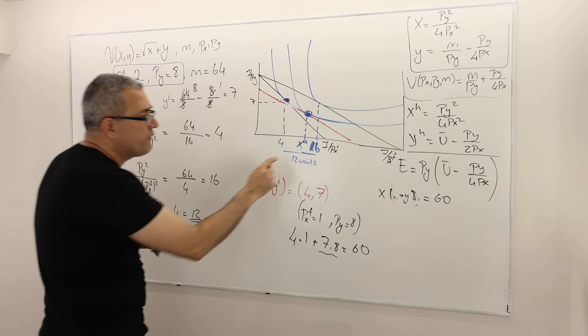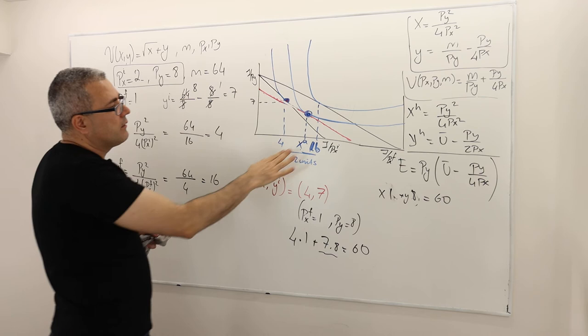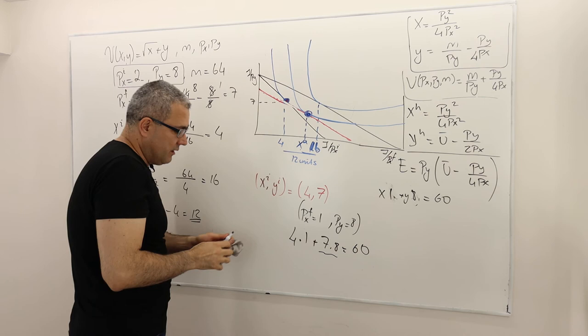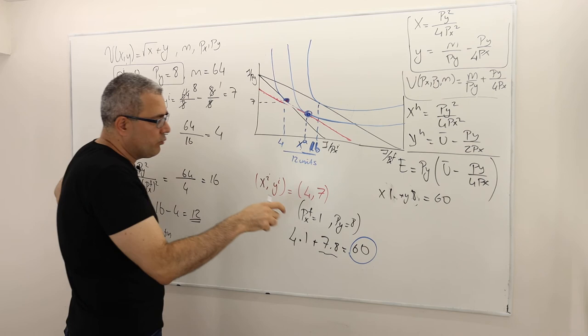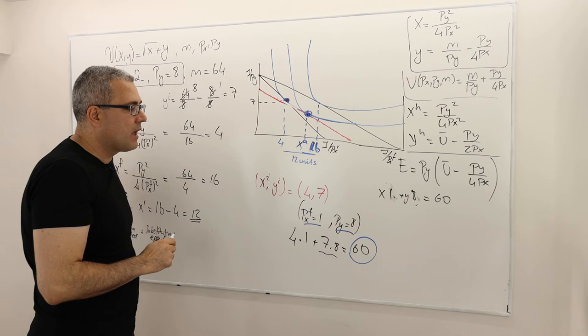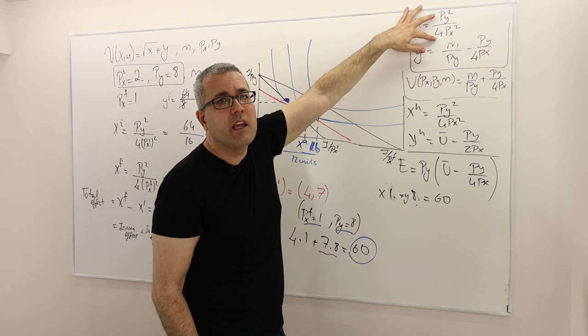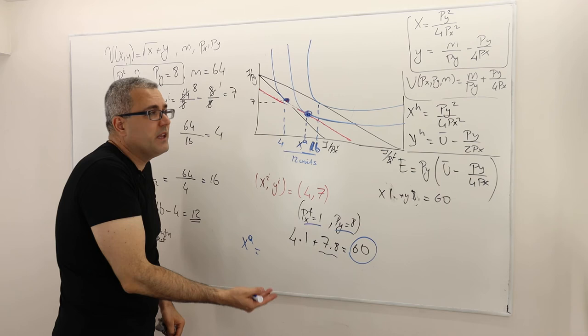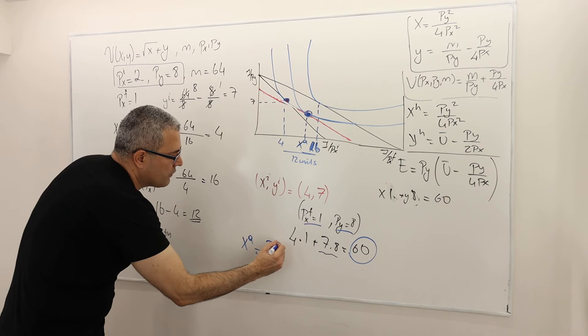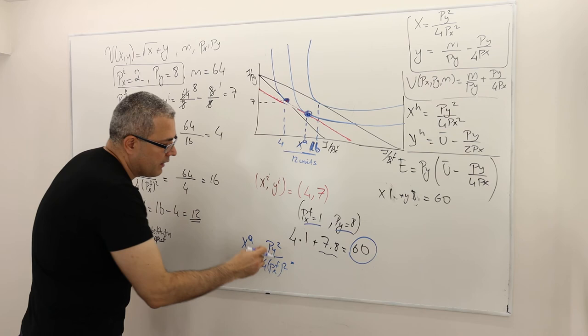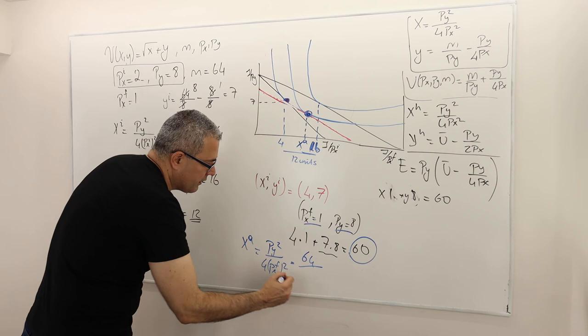Given this theory, I need to find XA. This is in fact the Marshallian demand under income $60 and the new price scheme PX_F=1, PY=8. XA equals PY² divided by 4·PX_F². Remember the Marshallian demand doesn't depend on income in this case. So XA = 8² / (4×1²) = 64/4 = 16.